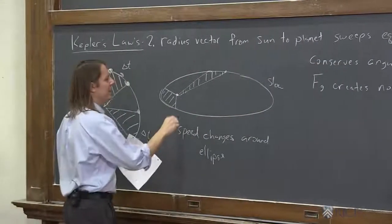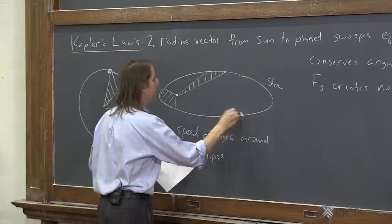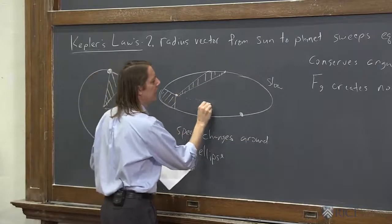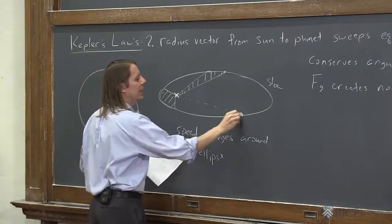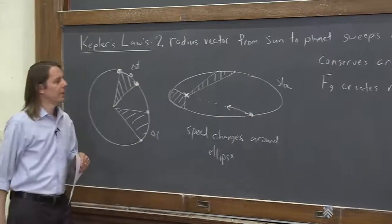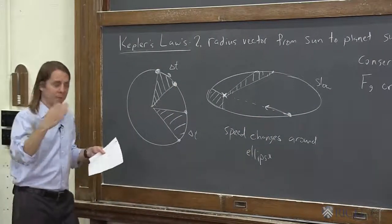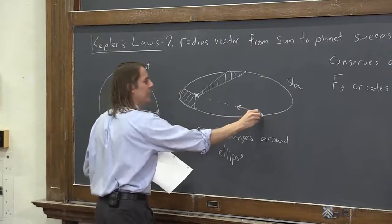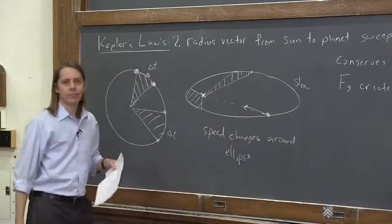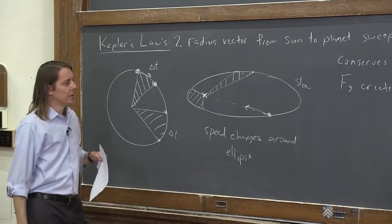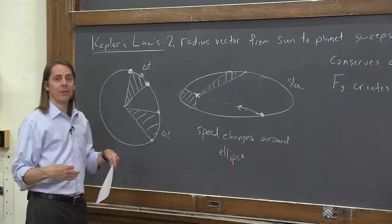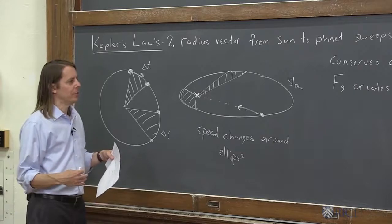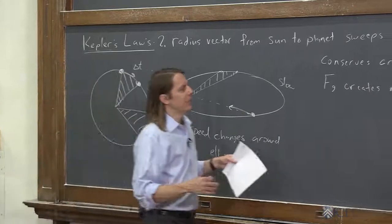So why does it conserve angular momentum? Because Fg creates no torque. Well, why is that? So here is the planet, here's the sun, right? The axis, the rotation is here, it's rotating around the sun, and the force of gravity is there. So it creates no torque because the force, by definition, always lies along this axis between the planet and the point of rotation. So the cross product will be the sine of 180 degrees will be zero.